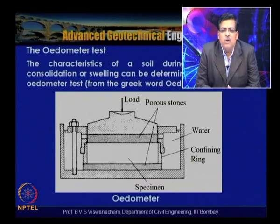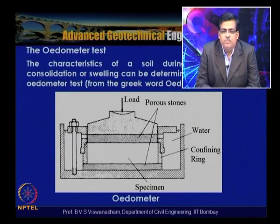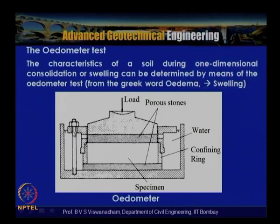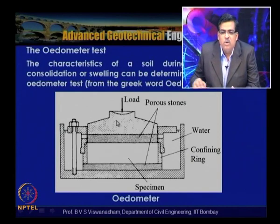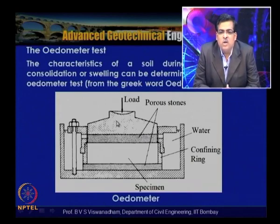Since radial strain epsilon_r is prevented, it equals zero, so axial strain epsilon_a equals volumetric strain epsilon_v. The sample is submerged in water to allow consolidation, and loads up to 600–800 kPa can be applied using a lever arm system in the laboratory.